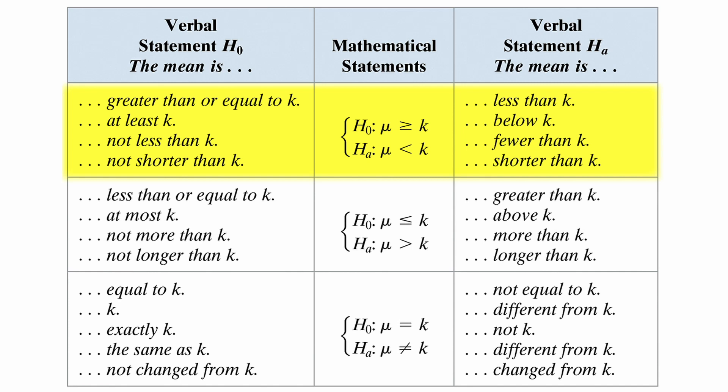Similarly, for an inequality going in the other direction, we have the same type of ideas where we would say it is less than or equal to compared to it is greater than, or it is above as compared to it is at most. And then finally, for the direct equals, not equals case, we say things like it is equal to or it is not equal to, it is exactly or it is different, and so on down the line.